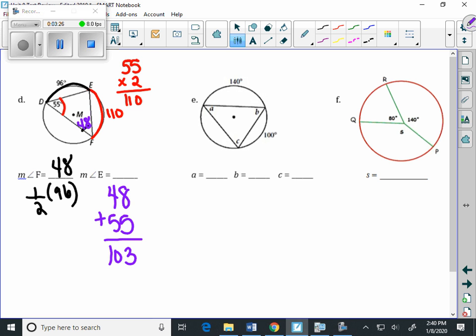And then a triangle has 180 degrees in it, so we can take 180 minus 103, and we get 77.